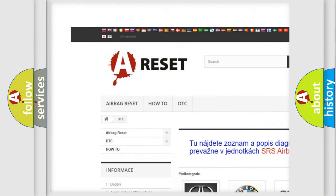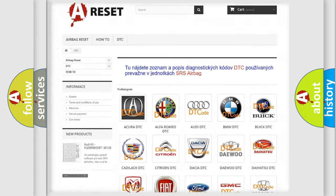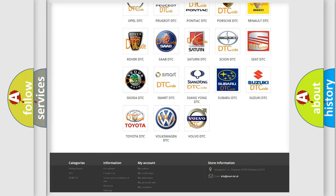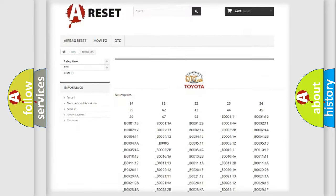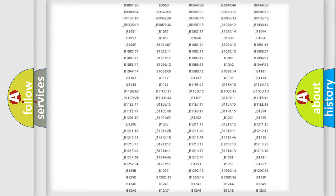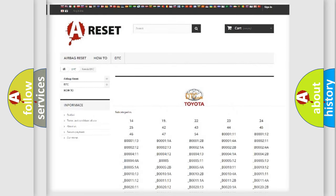Our website airbagreset.sk produces useful videos for you. You do not have to go through the OBD2 protocol anymore to know how to troubleshoot any car breakdown. You will find all the diagnostic codes that can be diagnosed in Toyota vehicles.